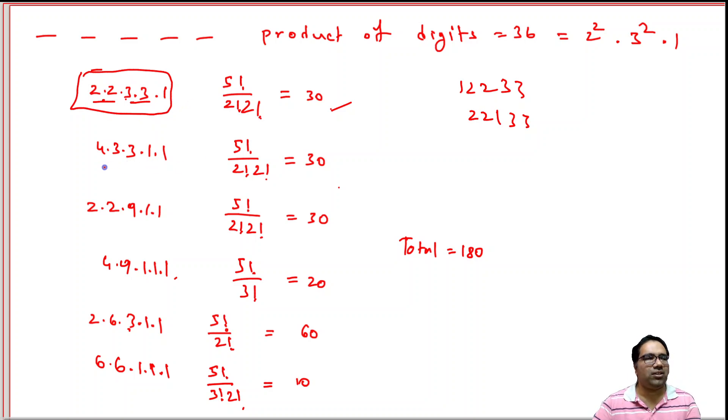Similarly, 2 threes and 2 ones and 1 four. Again, 5! / (2! × 2!). Similarly, here, 5! / (2! × 2!). Basically, 5 numbers of which 2 are same and 2 are same.